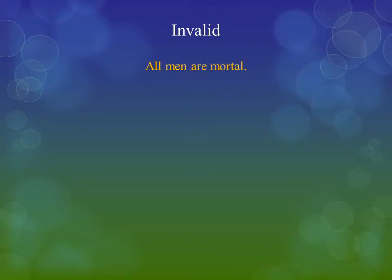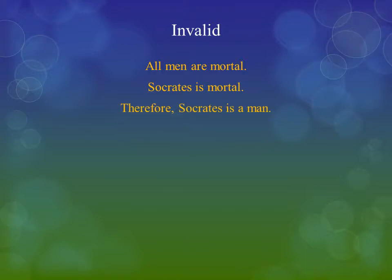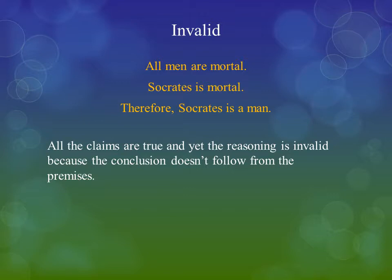What about an invalid reasoning? Consider this one: All men are mortal. Socrates is mortal. Therefore, Socrates is a man. The problem with this one is the following: on the one hand, if you look at the sentences, you might think that the claims are indeed true. Yet the reasoning itself remains invalid, because the conclusion doesn't follow from the premises. If I accept the premises — all men are mortal and Socrates is mortal — it doesn't follow.